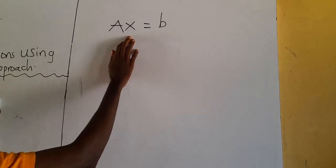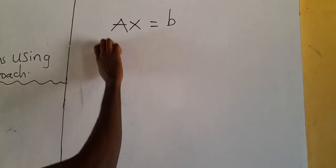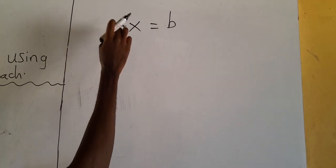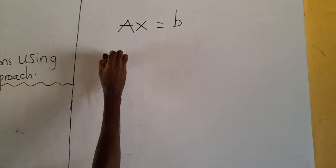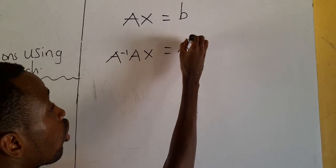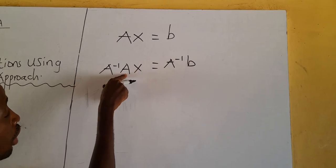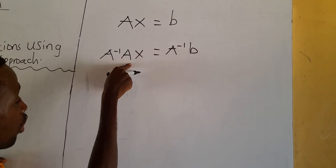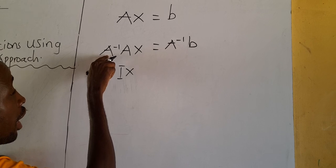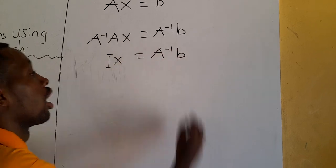Now we want X to stand alone. Since this is a matrix, we can't just divide both sides by A. So what do we do? We multiply both sides by the inverse of A. On the left: A⁻¹ times A times X. On the right: A⁻¹ times B. Since A⁻¹A = I, we get I times X = A⁻¹B. And since I times X = X, we have X = A⁻¹B.